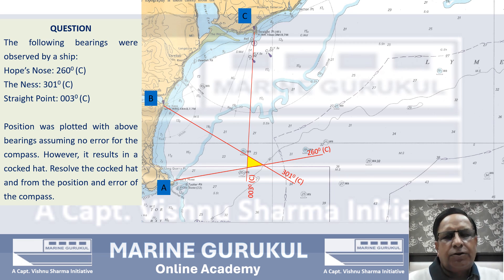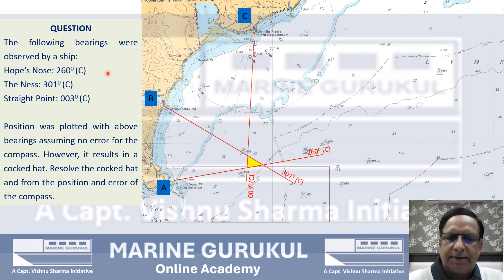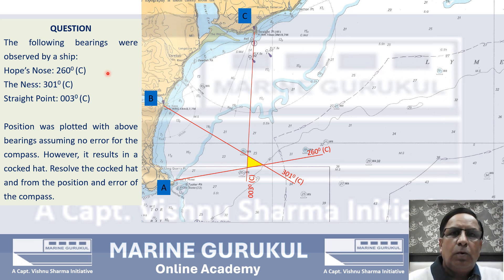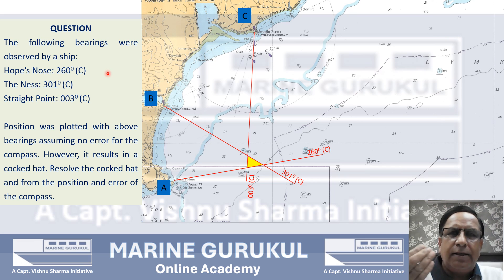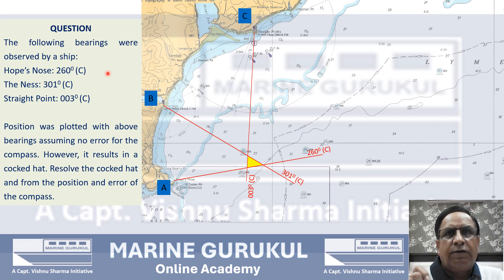If this question were given without mention of the cocked hat, we would have solved it using the concept of horizontal angles, obtaining position circles that lead to the vessel's position. Here also we shall get the same position circles — same center and same radius. What is going to change is only the method of obtaining the center.